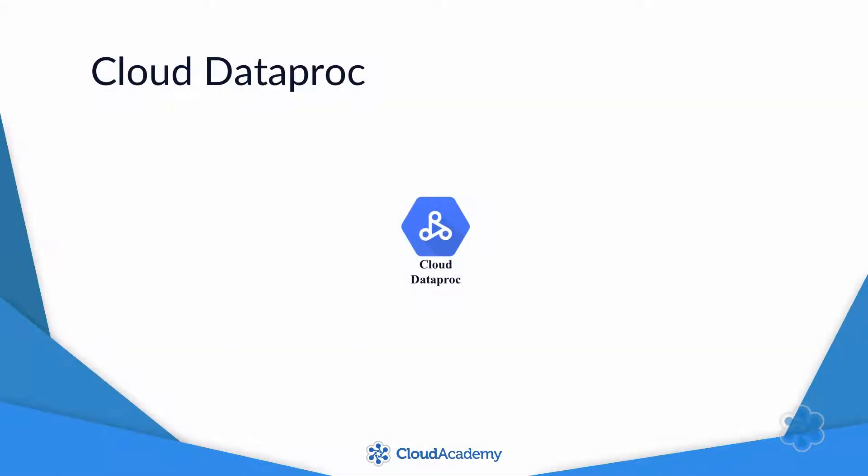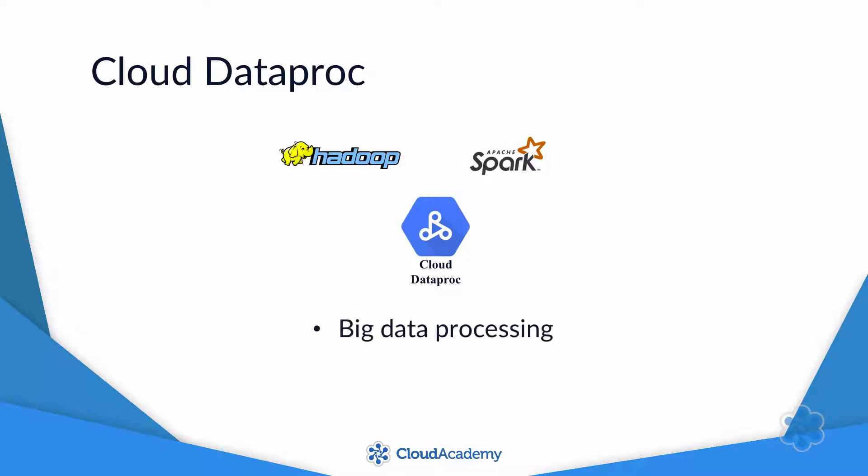Cloud Dataproc is a managed service for running Apache Hadoop and Spark jobs. It can be used for big data processing and machine learning.